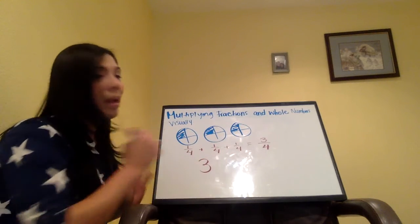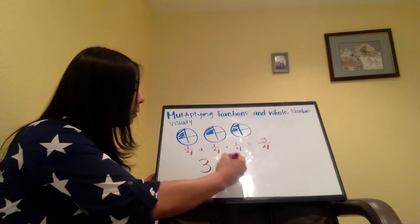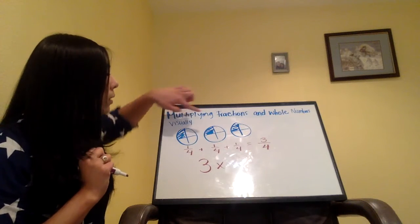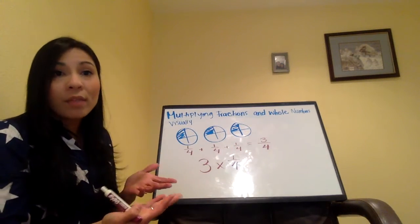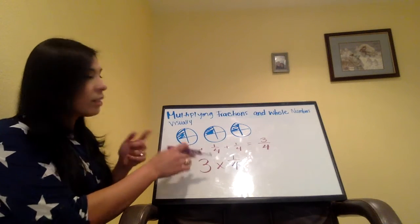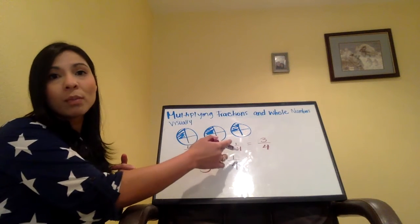So I'm going to multiply three times what? One, two, three. I have one-fourth because I have three of them. This is the equivalent of saying one-fourth plus one-fourth plus one-fourth.